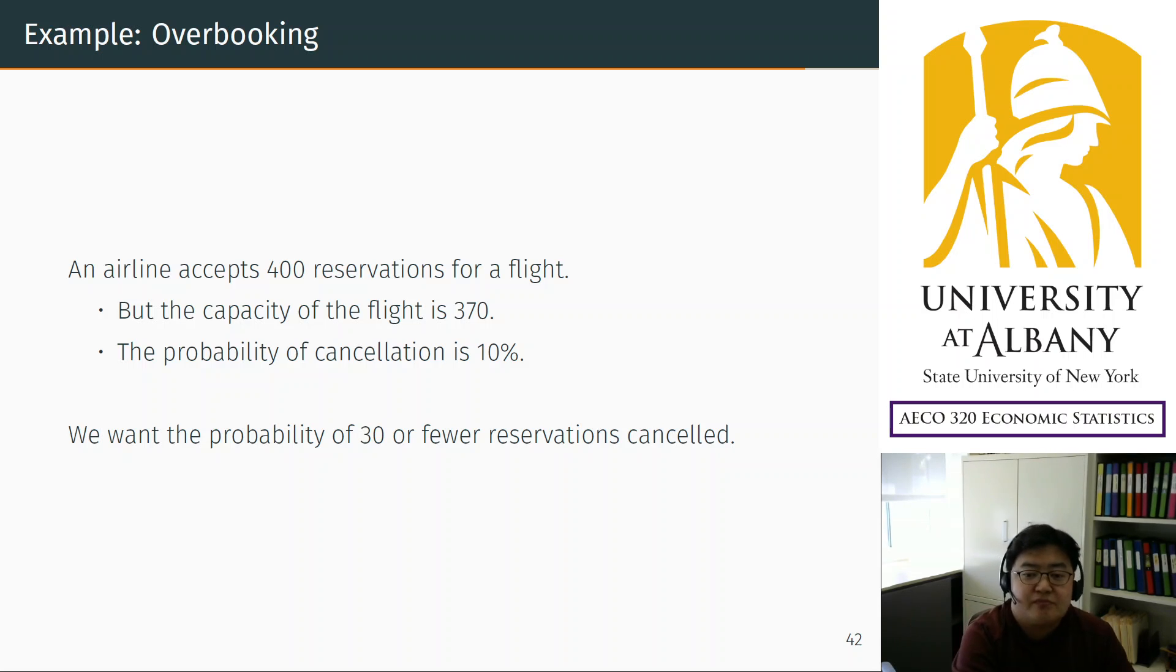And then in this case, what is the probability of 30 or fewer reservations are cancelled? In which case the airline company is in trouble and needs to compensate some passengers who had the reservation but cannot take the flight. So overbooking causes some problem in this case. What is that probability?